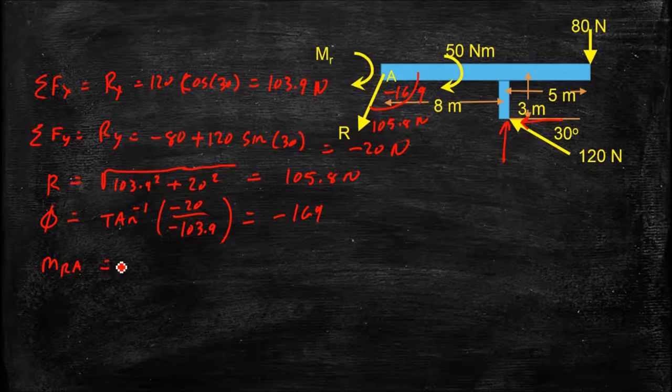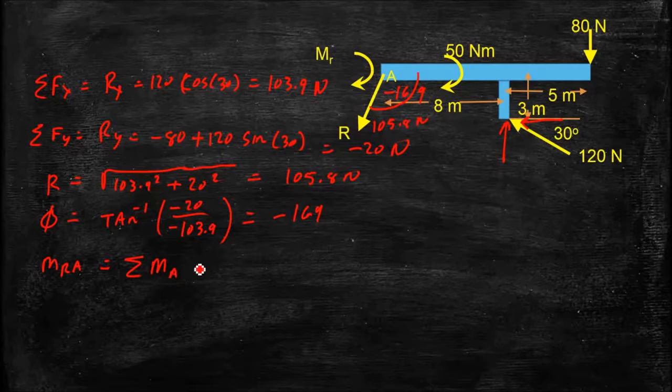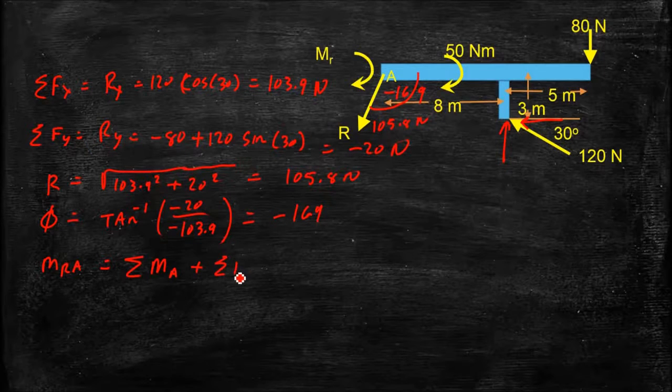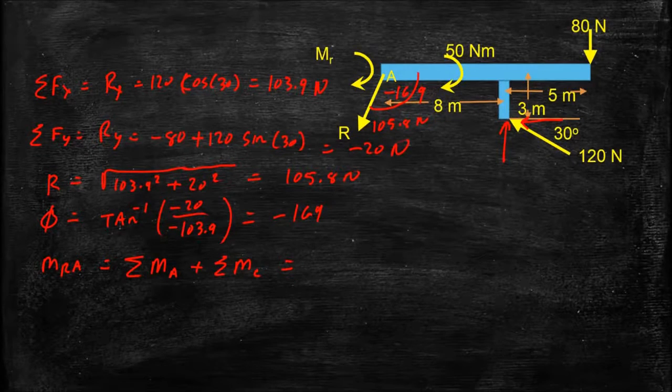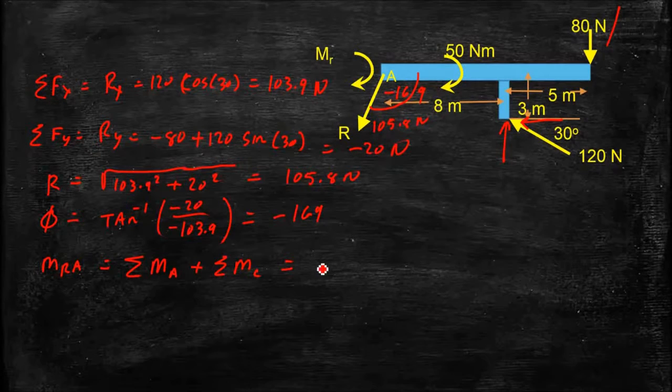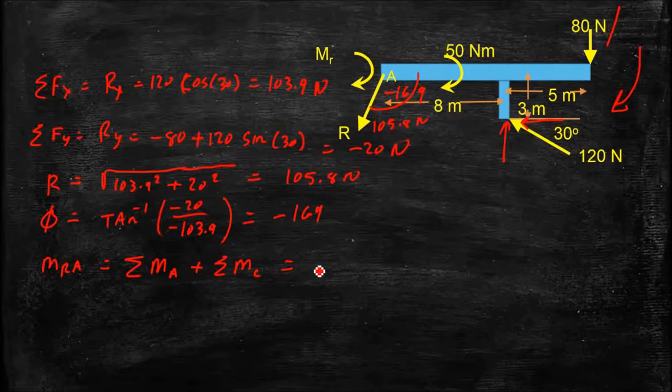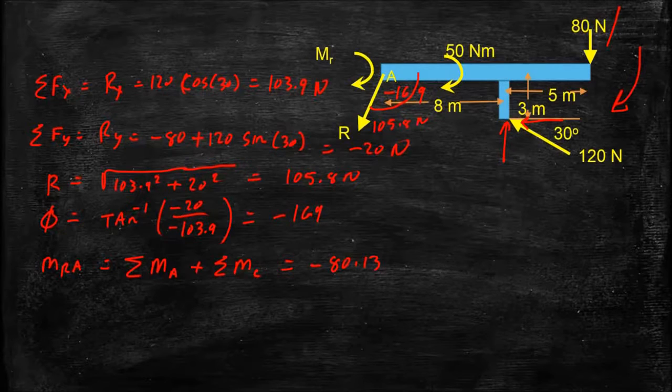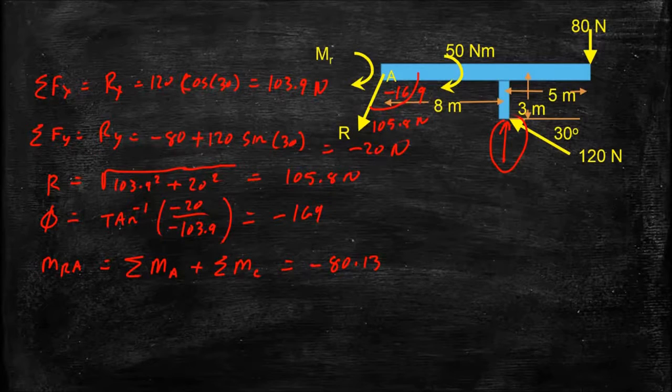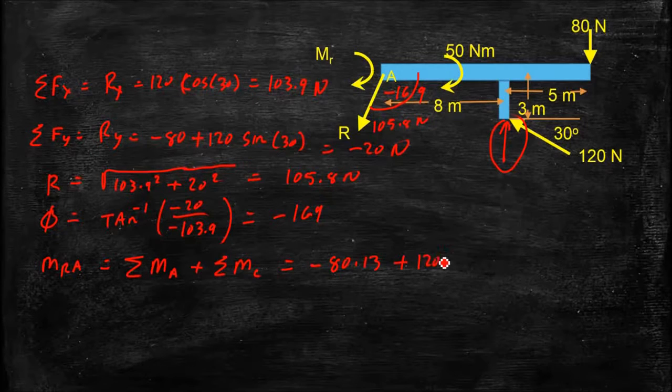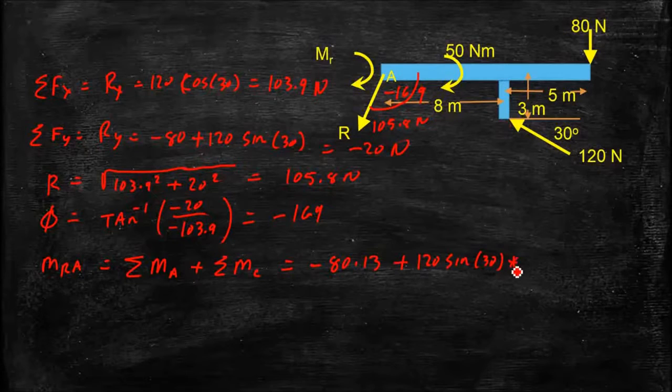My resultant moment at A is going to be equal to the sum of the moments about A, plus the sum of any couples that exist, and we do have one couple in this case. That is going to be equal to, summing up my moments, I've got my 80 Newton force, and that's at 13 meters, and that's going to generate a clockwise moment. So that's a negative 80 times 13. I've got the vertical component of the force here from this, that's going to be counterclockwise, so that's positive 120 sine of 30 times the distance 8 meters.